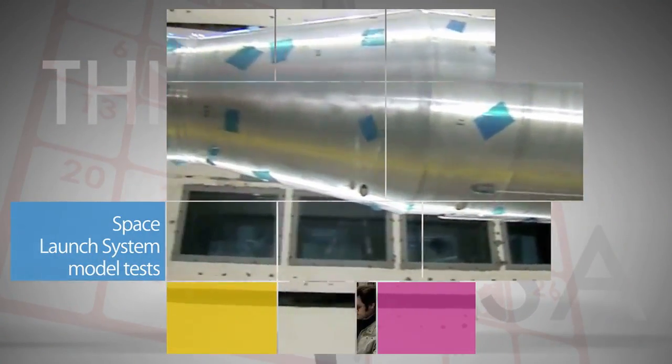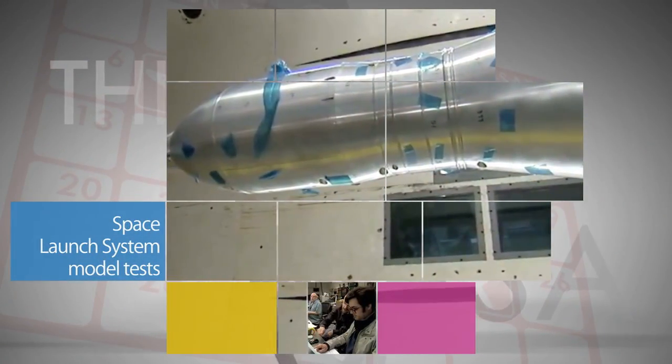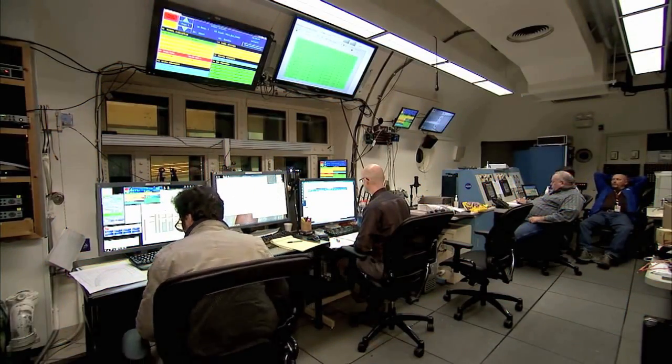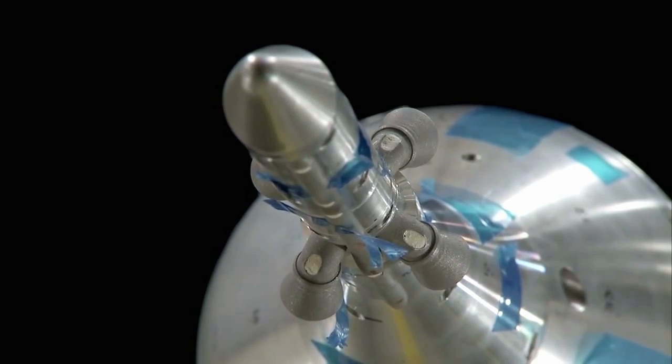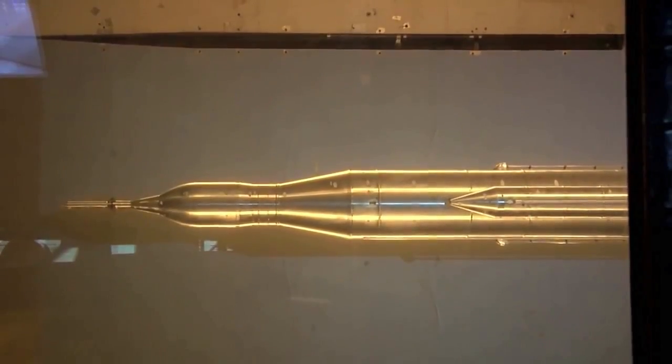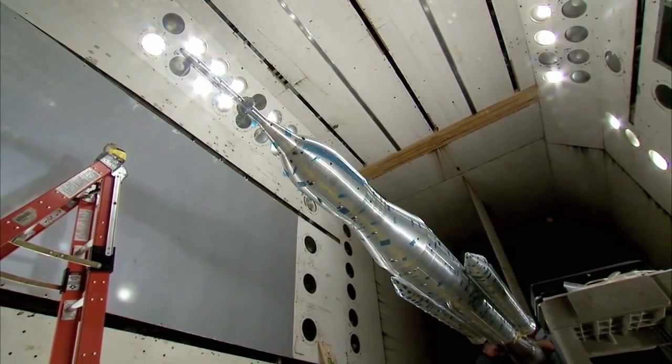A scale model of the 70-metric ton space launch system is being tested at Langley Research Center. The testing will help engineers at Marshall Space Flight Center, where the SLS program is managed, better understand the performance of the integrated system and fine-tune the performance of the rocket.